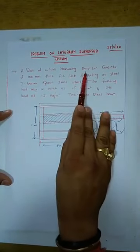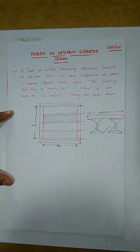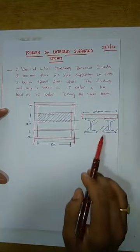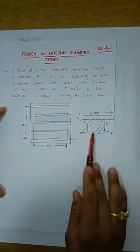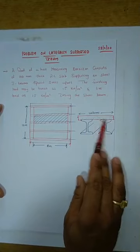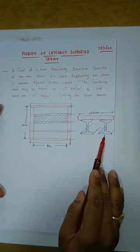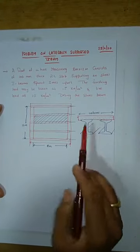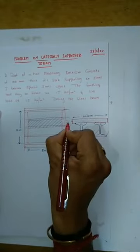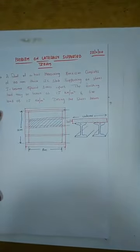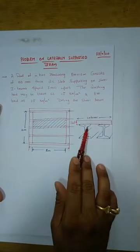The hall consists of a 100 mm thick RC slab. A laterally supported beam is a beam which is supported laterally on its top compression flanges. The compression flange is supported with the help of a roof, and when it is laterally supported like this, these beams are called laterally supported beams.